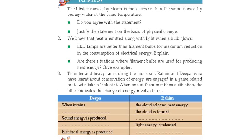We know that heat is emitted along with light when a bulb glows. When a bulb glows, the energies formed are light energy and heat energy. The question asks: LED lamps are better than filament bulbs for maximum reduction in the consumption of electrical energy — explain.